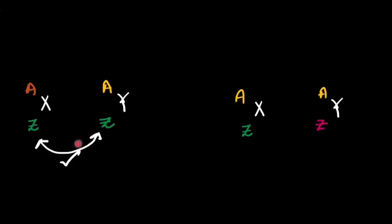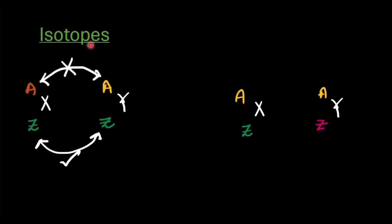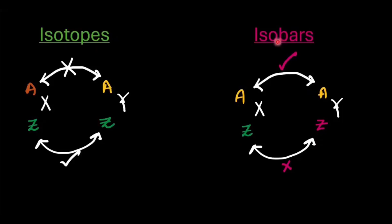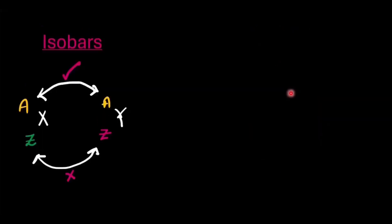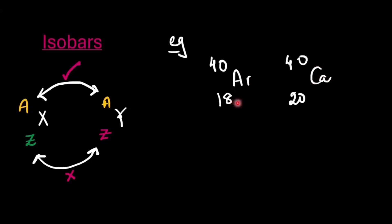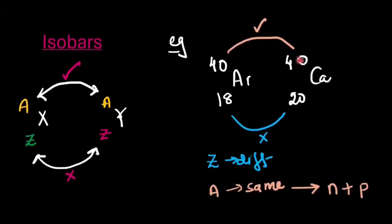Atoms that have the same value of Z but a different value of A or mass number are called isotopes. But what about atoms that have a different atomic number but the same mass number? These atoms are isobars of each other. Let's take the example of argon and calcium, where we can clearly see that their atomic numbers are different but their mass numbers are exactly the same — they have the same number of nucleons, that is neutrons plus protons.